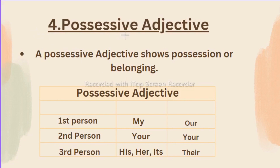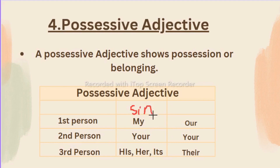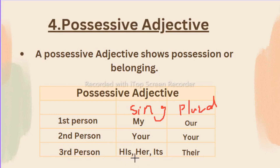Now let us see the fourth type of adjective — possessive adjective. We have already learned this in the pronoun chapter. This possessive adjective shows possession, belonging, or ownership of a person. For the first person singular we use 'my,' and plural 'our.' For the second person, both singular and plural, we use 'your.' For the third person we use 'his,' 'her,' and 'its,' and with the plural we use 'their.'